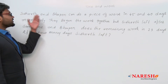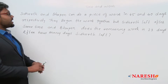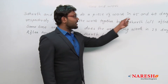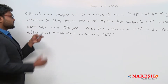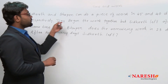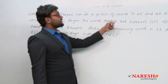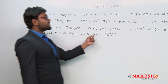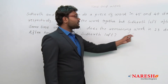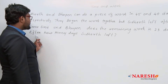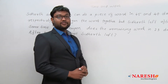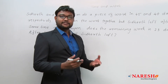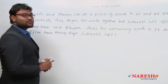The question is: Siddhartha and Bhupen can do a piece of work in 45 and 40 days respectively. They begin the work together but Siddhartha left after some time, and Bhupen does the remaining work in 23 days. After how many days did Siddhartha leave?